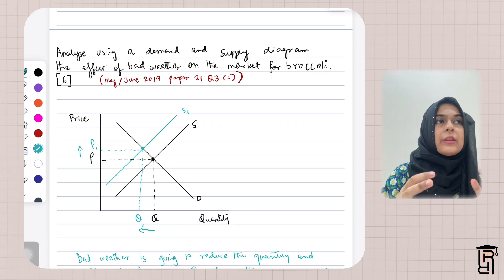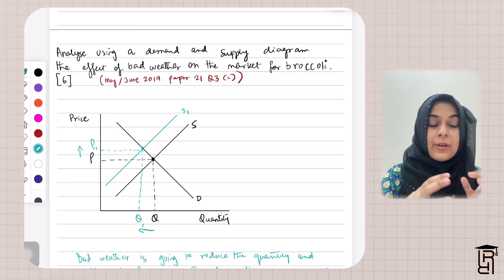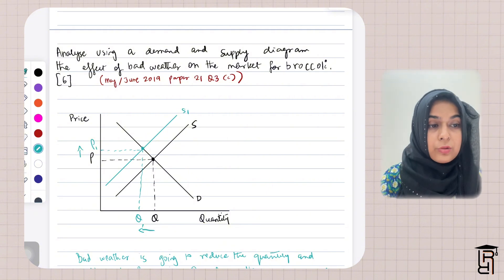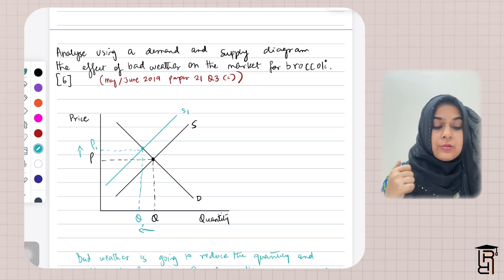So that's it for this question. You guys should know that bad weather is going to affect the supply because bad weather affects the supply of crop. All of us know that even floods and disasters affect the supply of crops. That's it for this video. Thank you so much for watching.